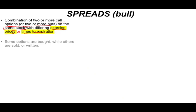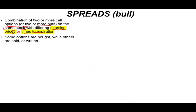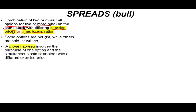So it's the same option. Some options are bought while others are sold. So you buy some calls and you sell some calls. The same stock with either a different strike, different or the same strike price or a different time expiration. Now, we call it a money spread when we purchase one option and simultaneously sell another option with a different exercise price. So it's a money spread, exercise price.